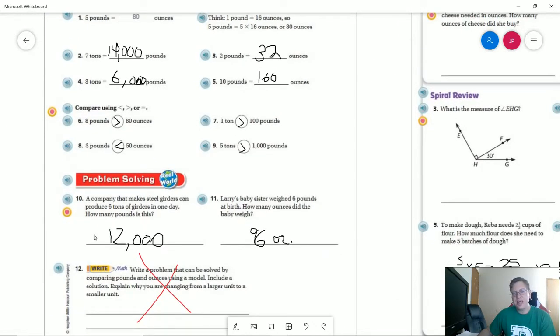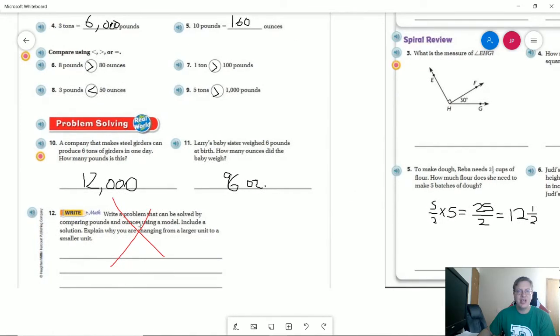Number 10, 2,000 times 6 gives us 12,000. Number 11, 16 times 6 gives us 96 ounces.